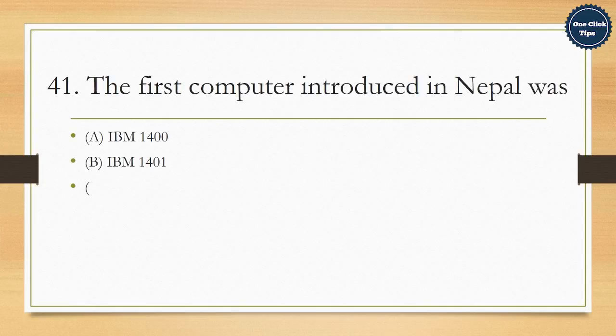41. The first computer introduced in Nepal was A. IBM 1400, B. IBM 1401, C. IBM 1402, D. ICL 2950. The correct answer is B. IBM 1401.